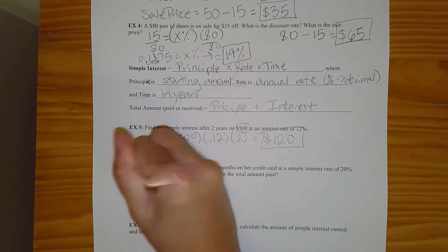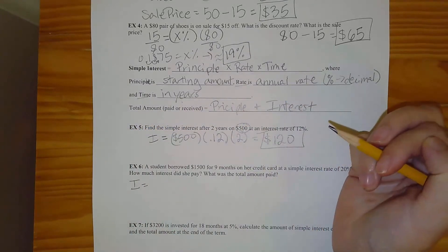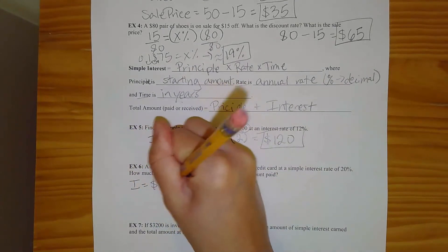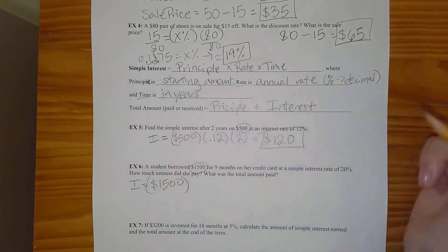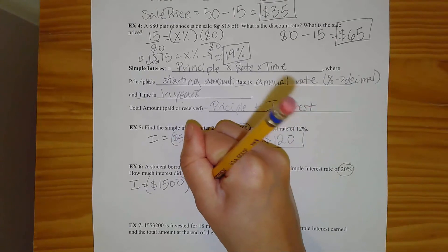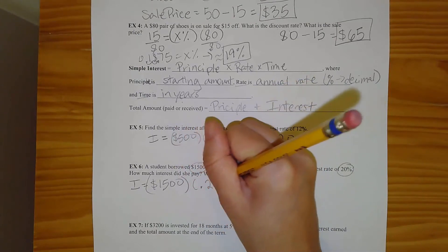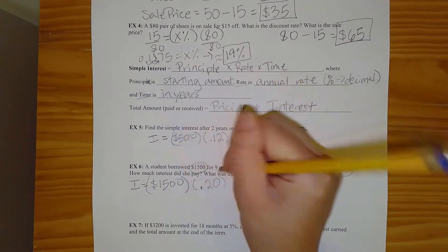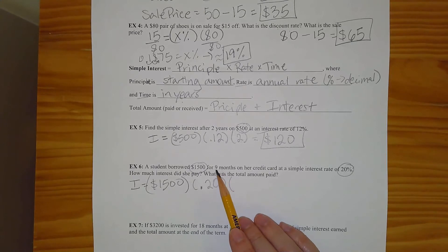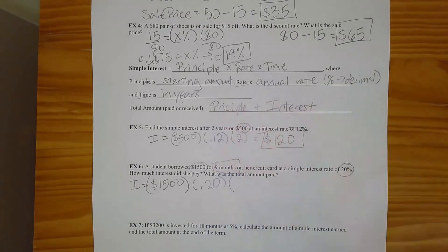So interest is principal. So the starting amount that she borrowed is right here. It's $1,500 times rate. So it's at a simple interest rate of 20%. 20% as a decimal is going to be 0.2 times time in years. And you notice that they did not give us the amount of time in years. We have the amount of time in months. So it tells us that it's nine months.